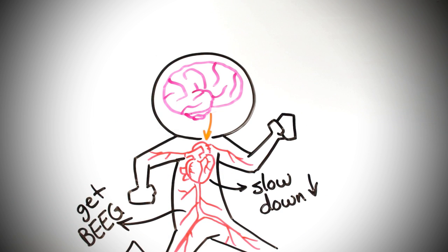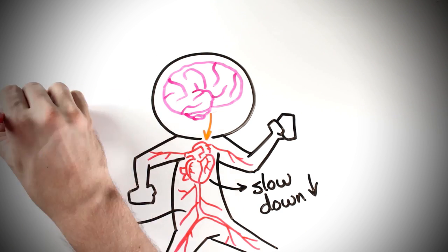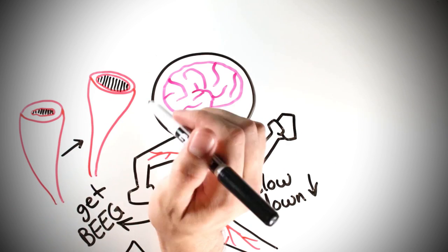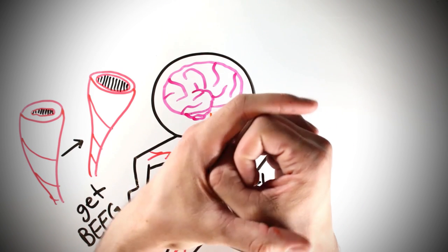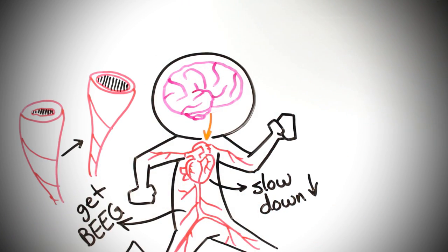Secondly, it tells your bloodstream to get big. And so, what your bloodstream does when it gets big is it vasodilates, meaning it goes from regularly sized tubes to big tubes, which look like this.